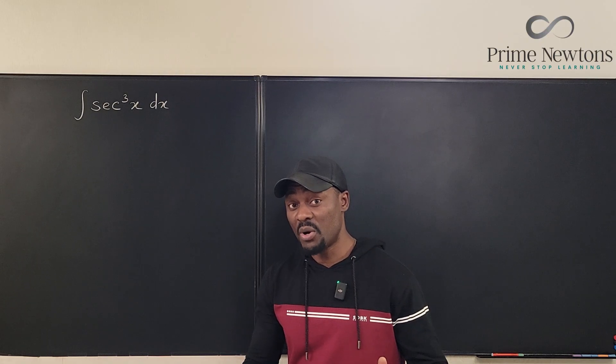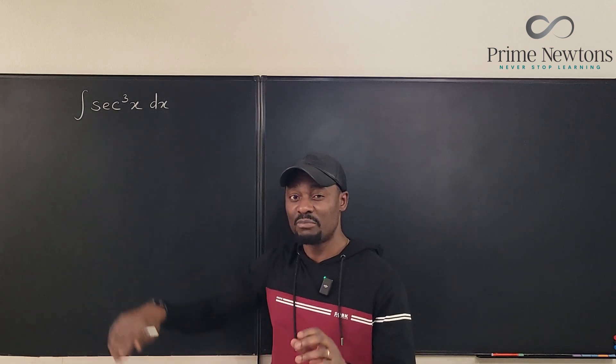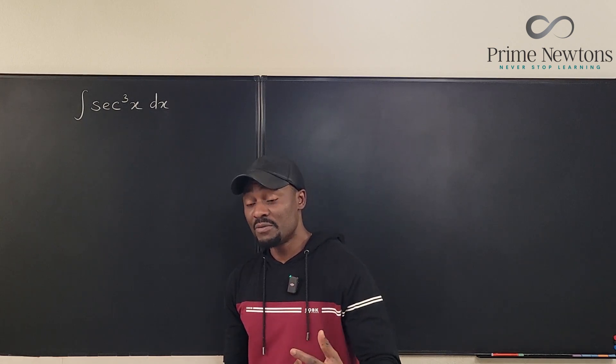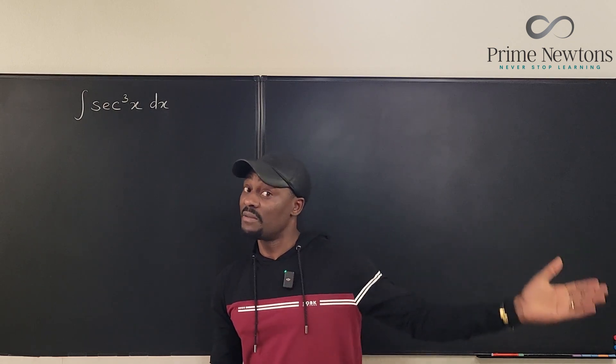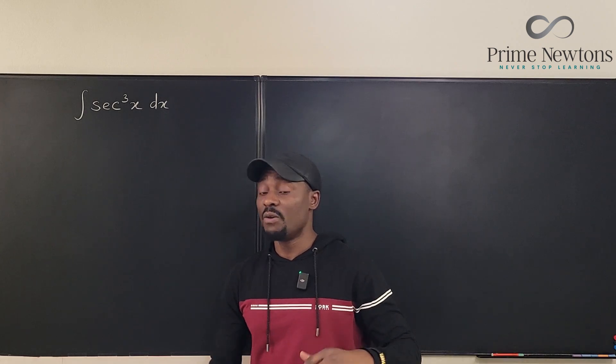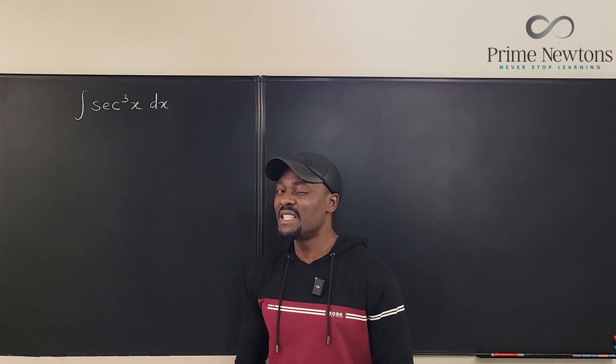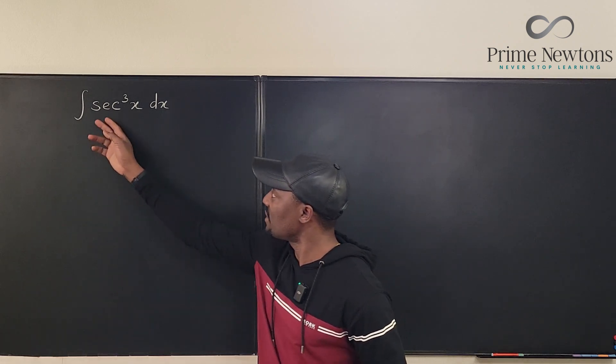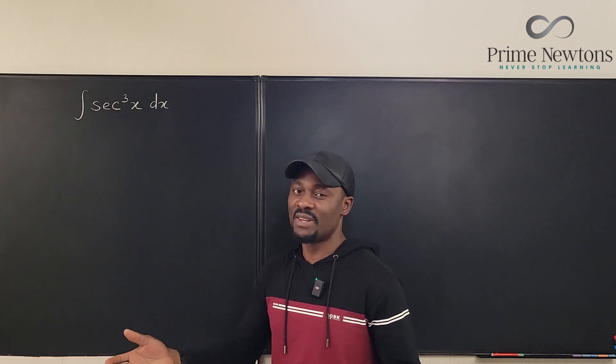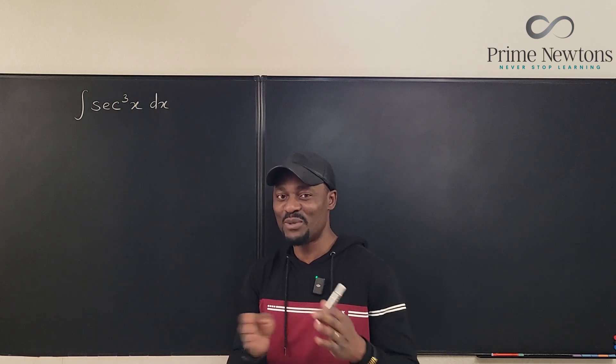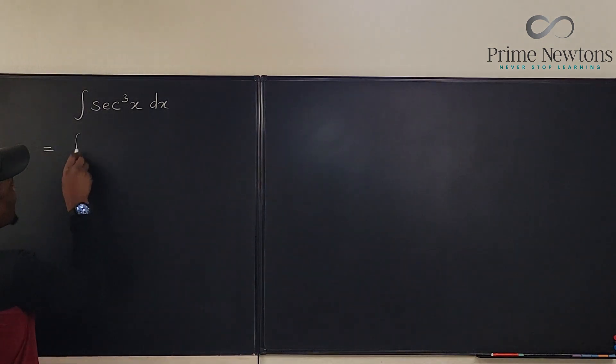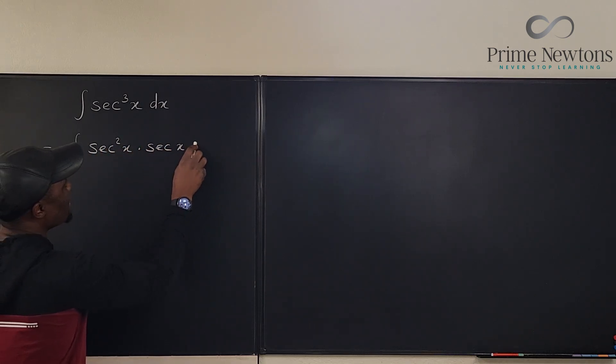So using integration by parts, you're gonna treat the integrand as the product of two functions. One of them you're gonna assume is the derivative of another function. One of them it's not the derivative of anything, but you can easily differentiate it, but one you can easily integrate. So if we're gonna break secant cubed into two, well definitely because it's odd, there are only two options. You keep square ones and you have secant ones. So we can say that this is the same thing as the integral of secant squared x multiplied by secant x dx.